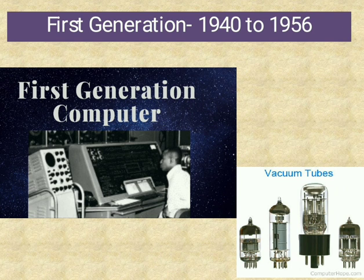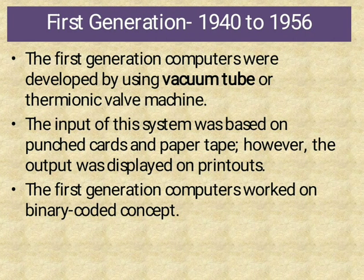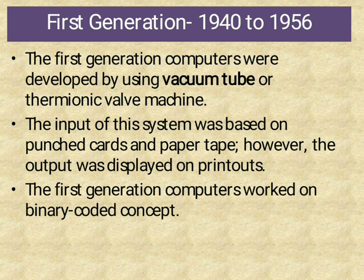1st Generation, 1940–1956. See the picture — this is the 1st generation of computer. Vacuum tubes are used. The 1st generation of computer was developed using vacuum tube and thermionic valve machines. The input system was based on punched cards and paper tape. The display was in printed form. The 1st generation of computer worked on binary code concept.